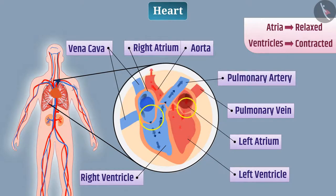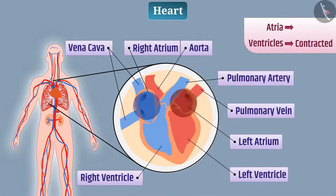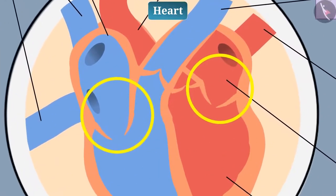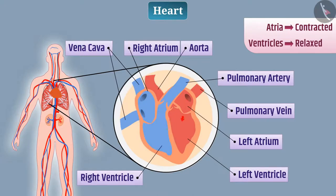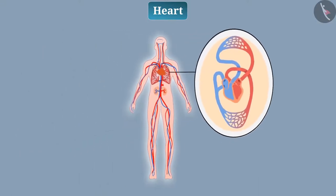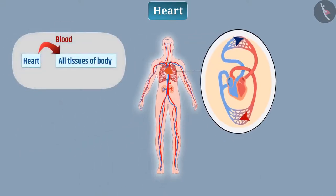There is a valve between the atrium and the ventricle which prevents backflow of blood. When both atria contract and both ventricles relax, the valve between the atrium and ventricle opens. The oxygenated blood gets transferred from the left atrium to the left ventricle, and the deoxygenated blood gets transferred from the right atrium to the right ventricle. The ventricles pump the blood throughout the body. So, the muscular wall of the ventricle is thicker than the wall of the atrium. The continuous movement of blood from the heart to all tissues of the body and back to the heart is called circulation.